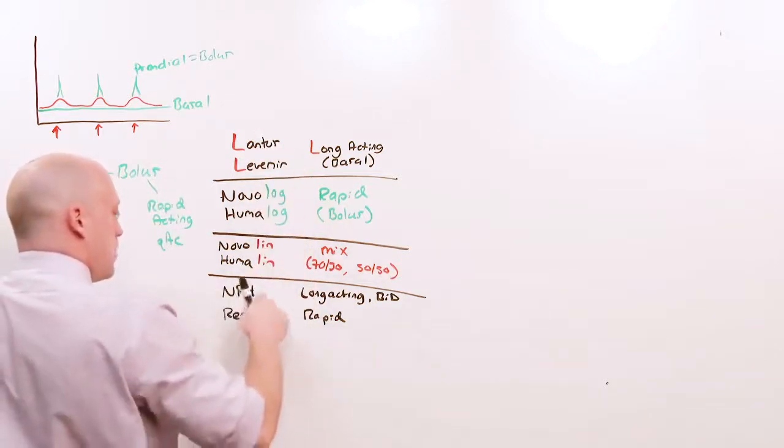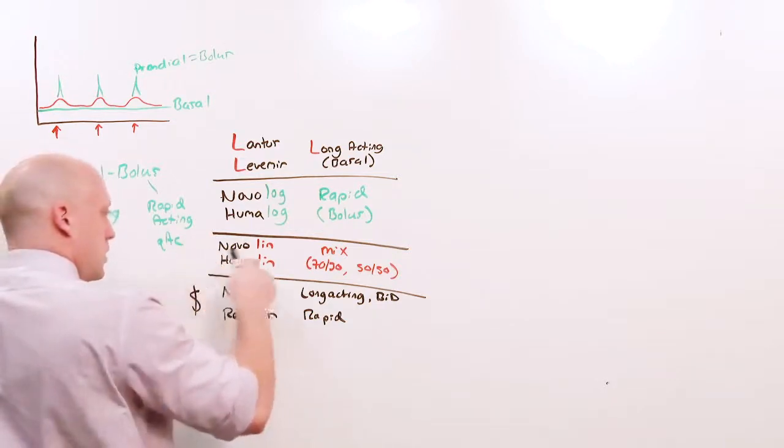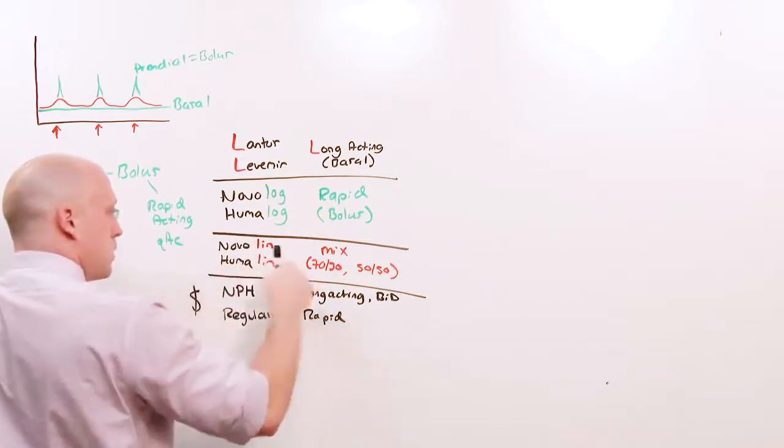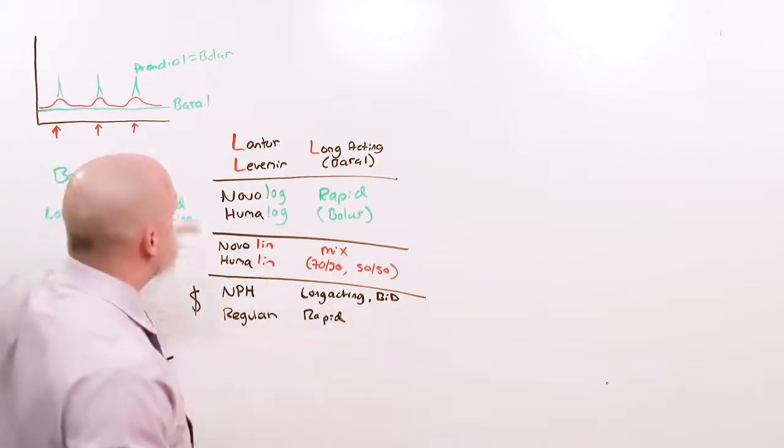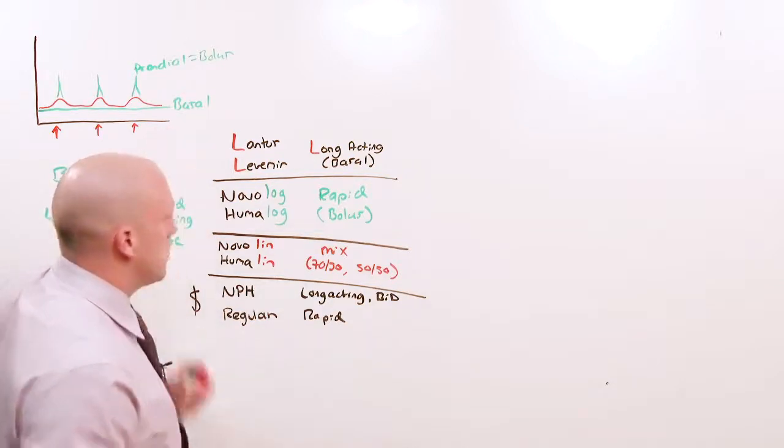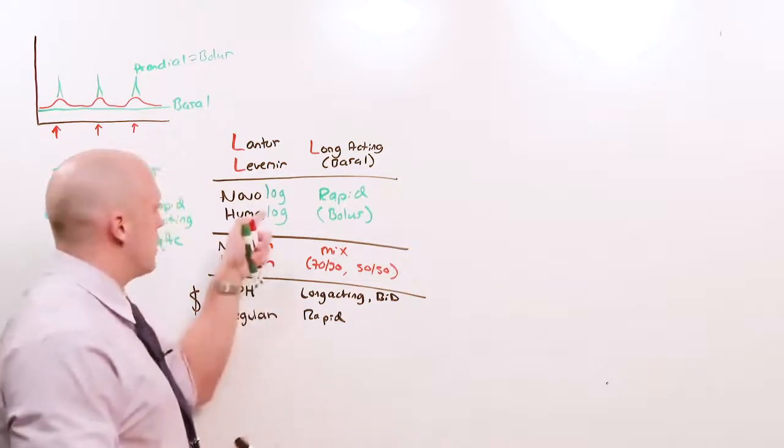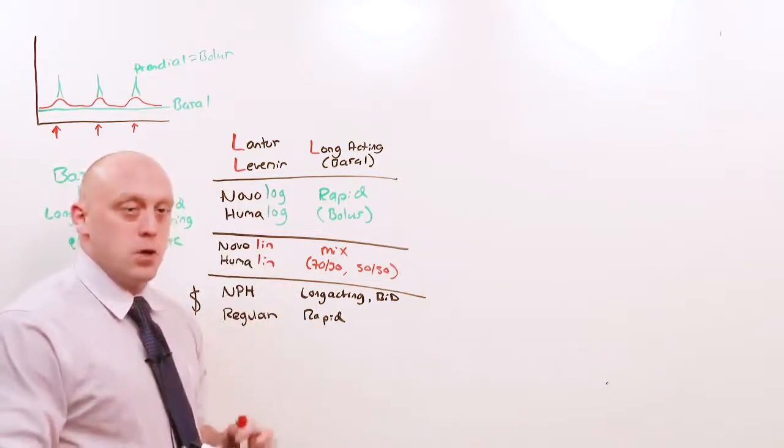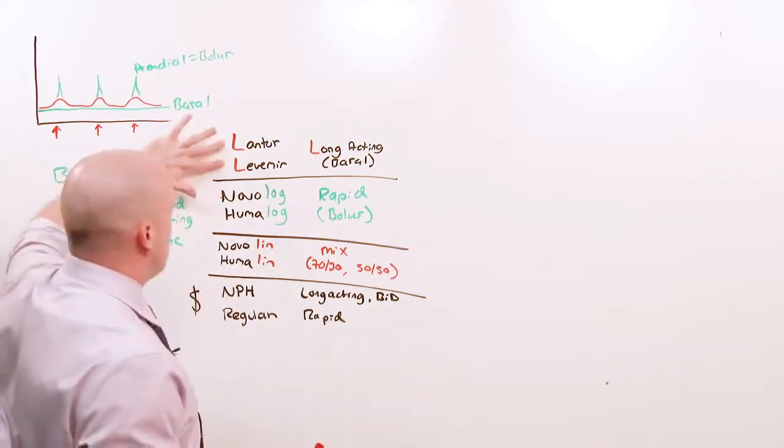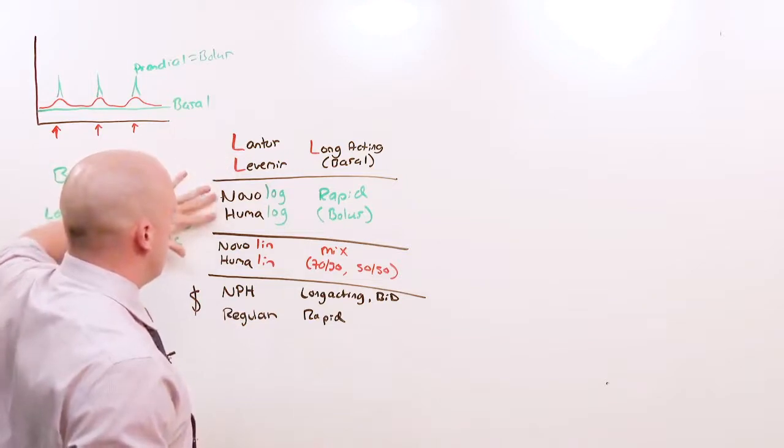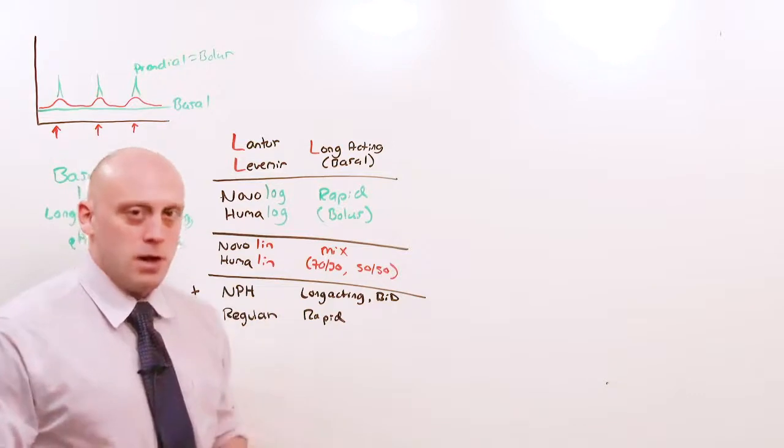So how do you pick these? NPH and regular are for cost. They're really cheap. As we'll discuss, Novo lin and Huma lin mixtures are really easy to use, though they're not that good. And the best regimen you can pick is a basal bolus insulin using both long-acting and rapid-acting. The faster the action of insulin, Novo log-Huma log, the better it is. You can simulate basal bolus with NPH and regular, but where you should really go is the long-acting once a day with the rapid-acting with meals. This will all kind of come together, I promise.